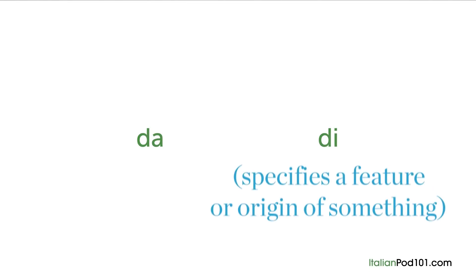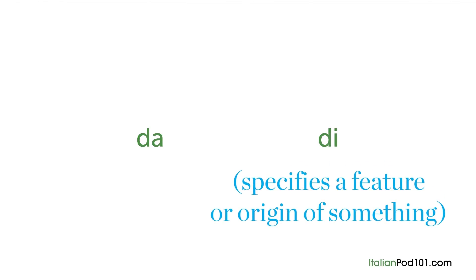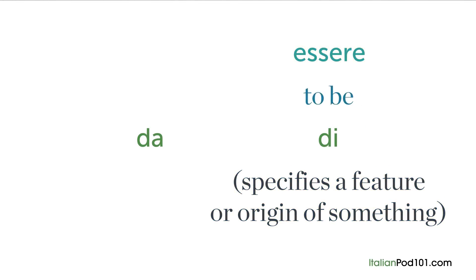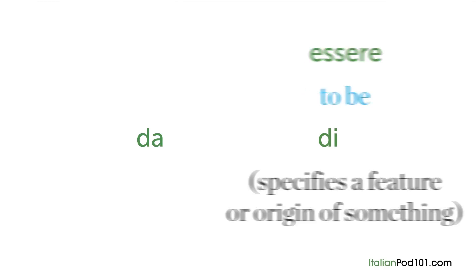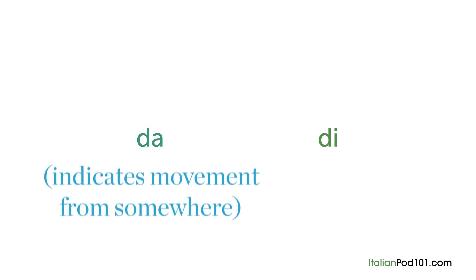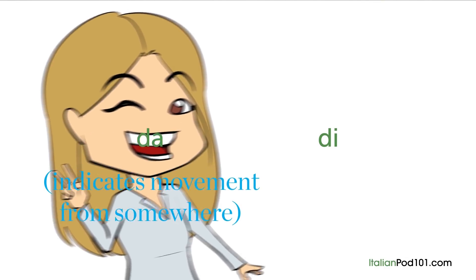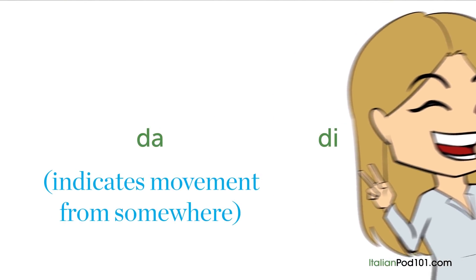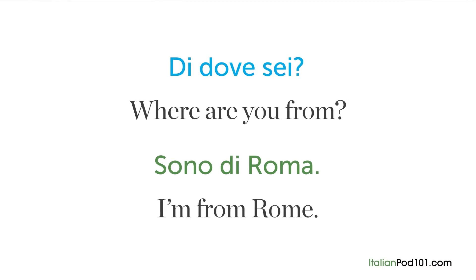DI specifies a feature or origin of something, usually with the verb essere, 'to be.' So you can say: DI DOVE SEI? — 'Where are you from?' — Sono di Roma. — 'I'm from Rome.'